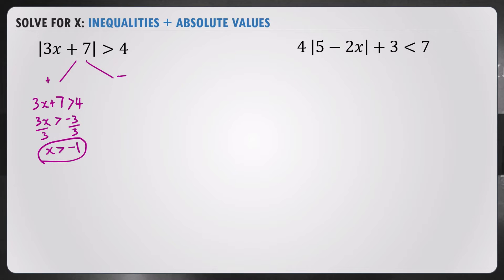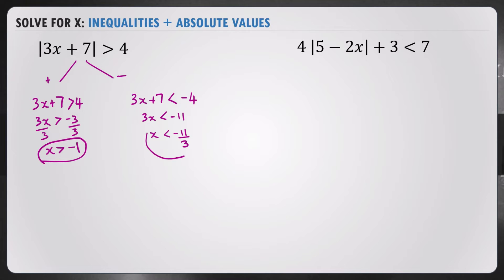Then we plug in the negative case where we write 3x plus 7, and we flip the sign — instead of greater than it becomes less than negative 4. Then we carry on and solve: we get 3x is less than negative 11, and we get x is less than negative 11 over 3.